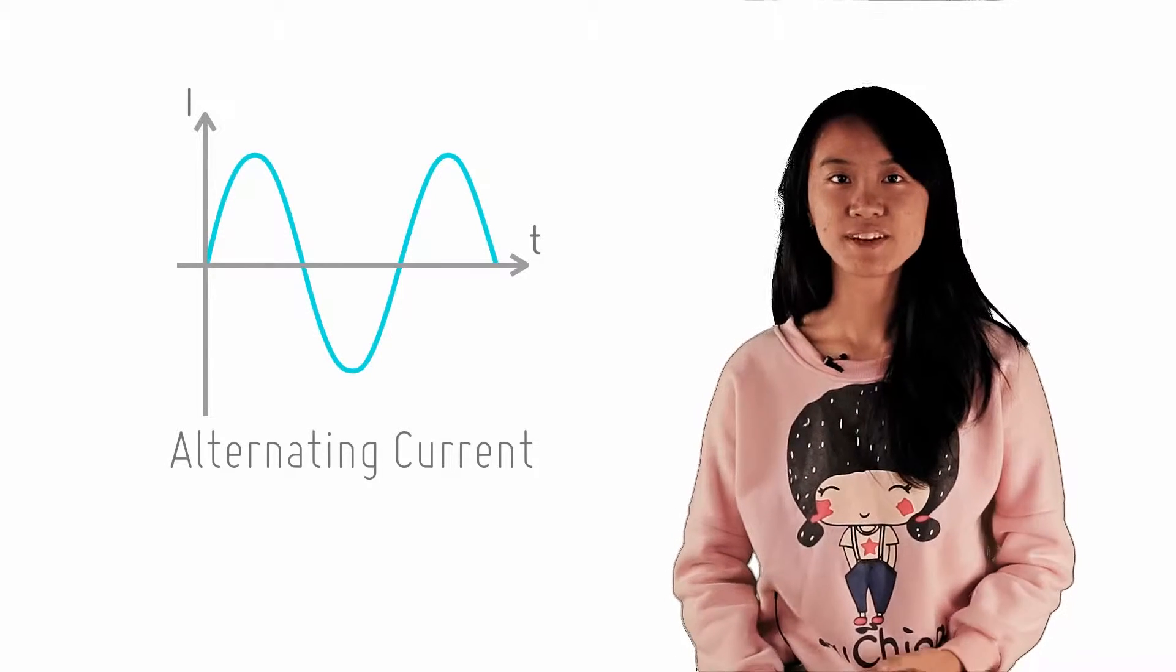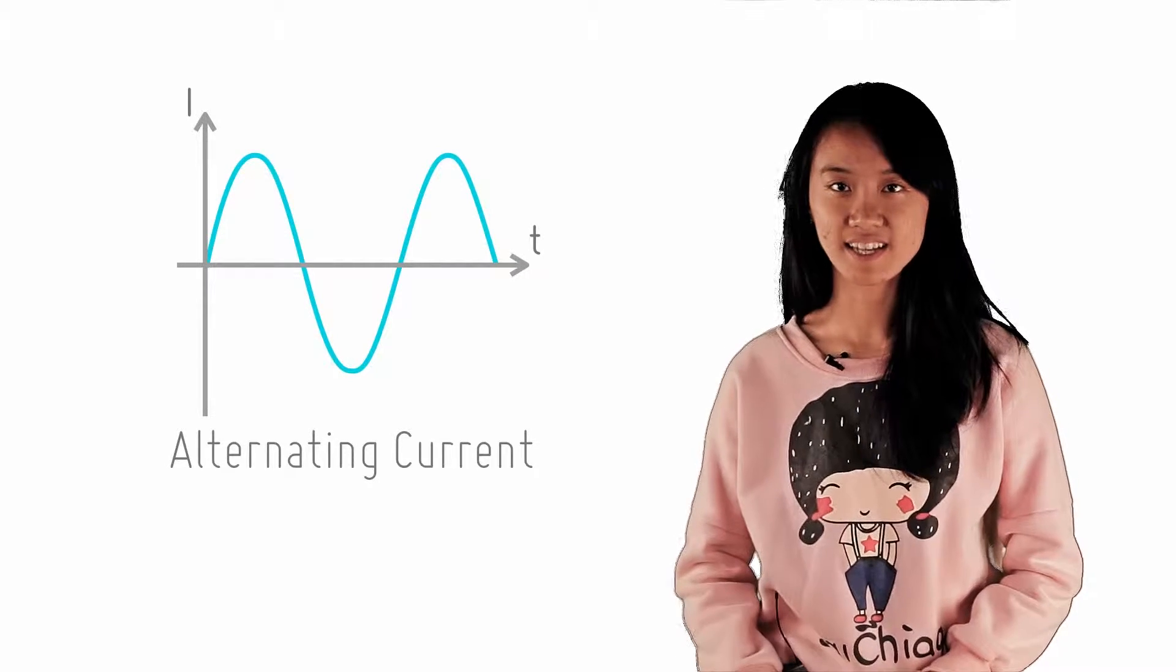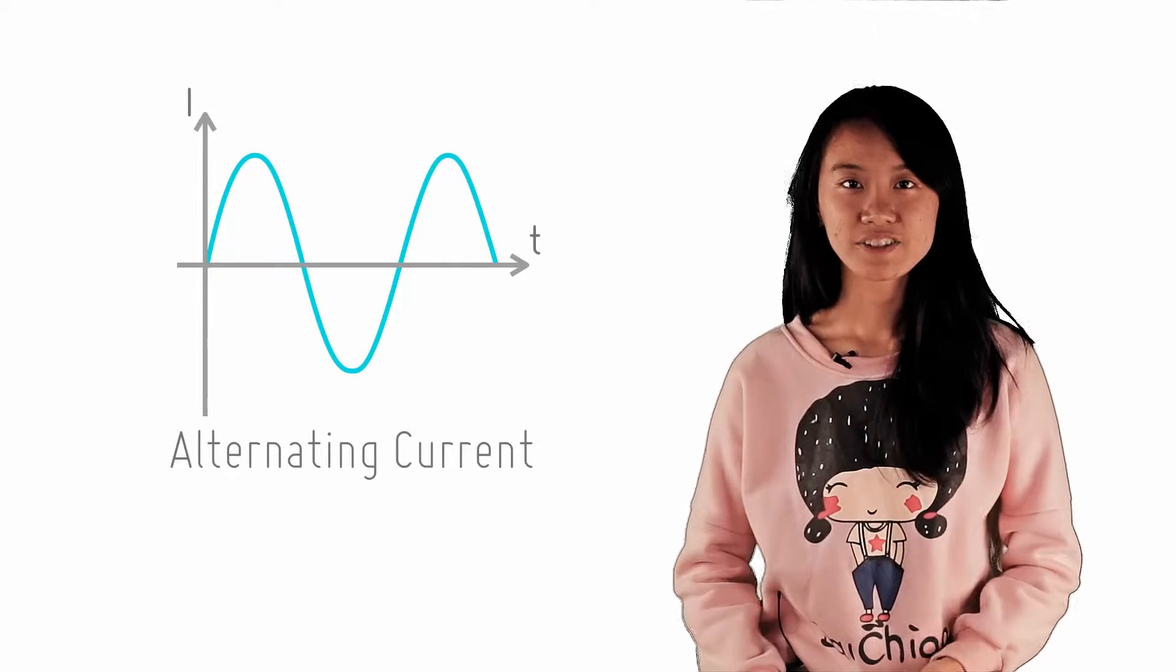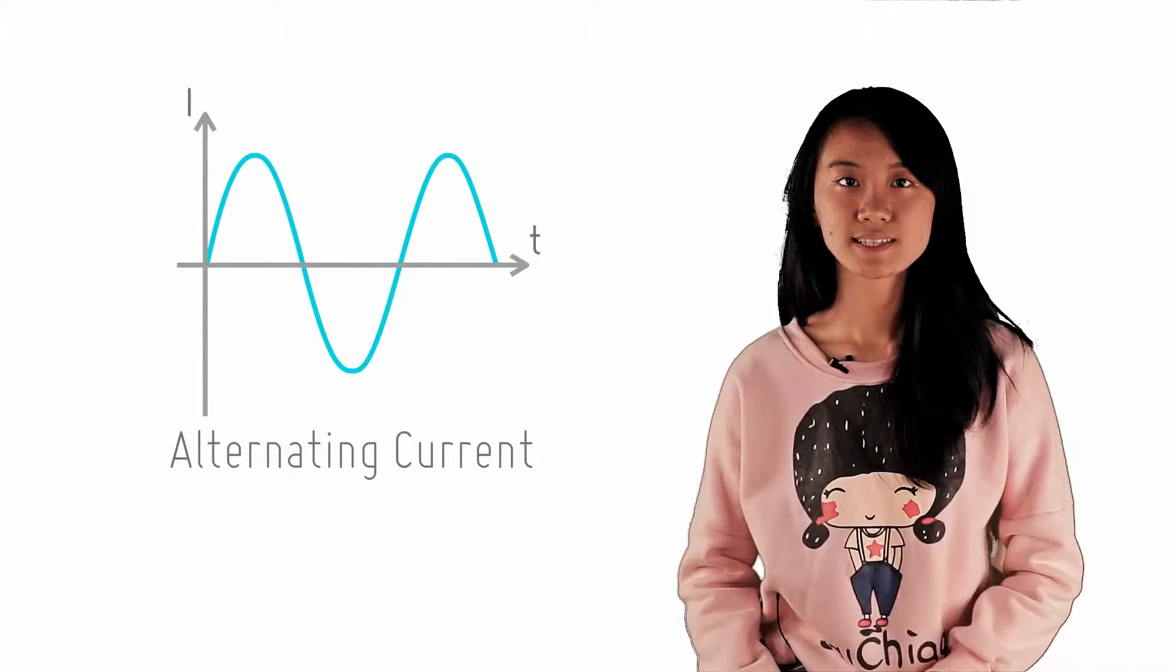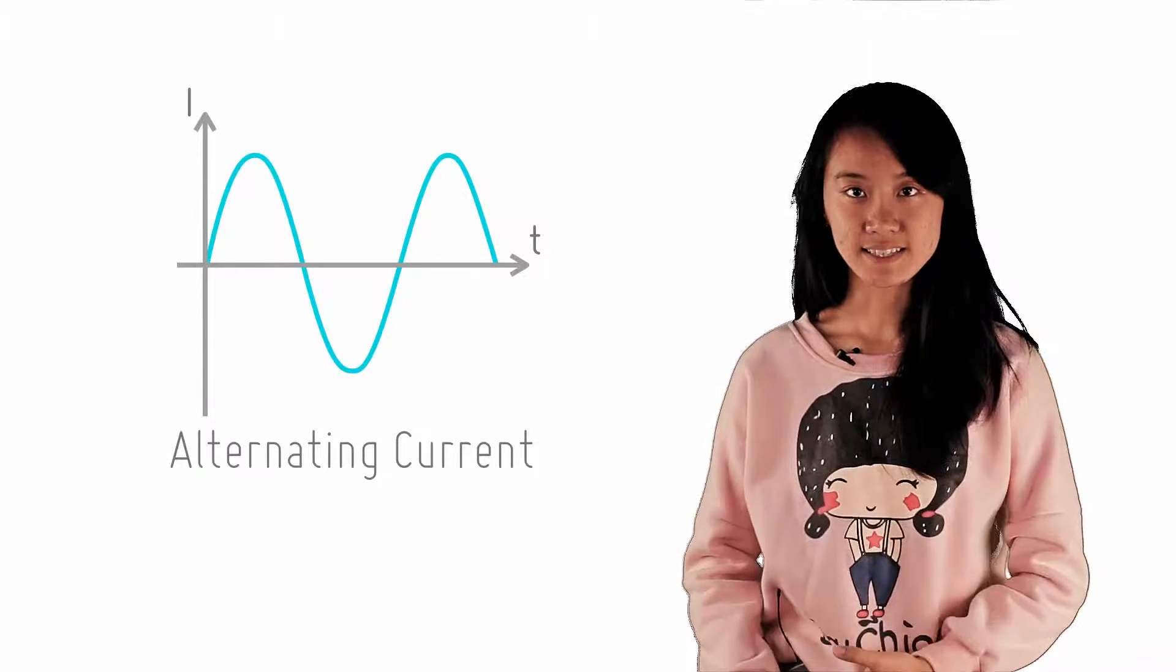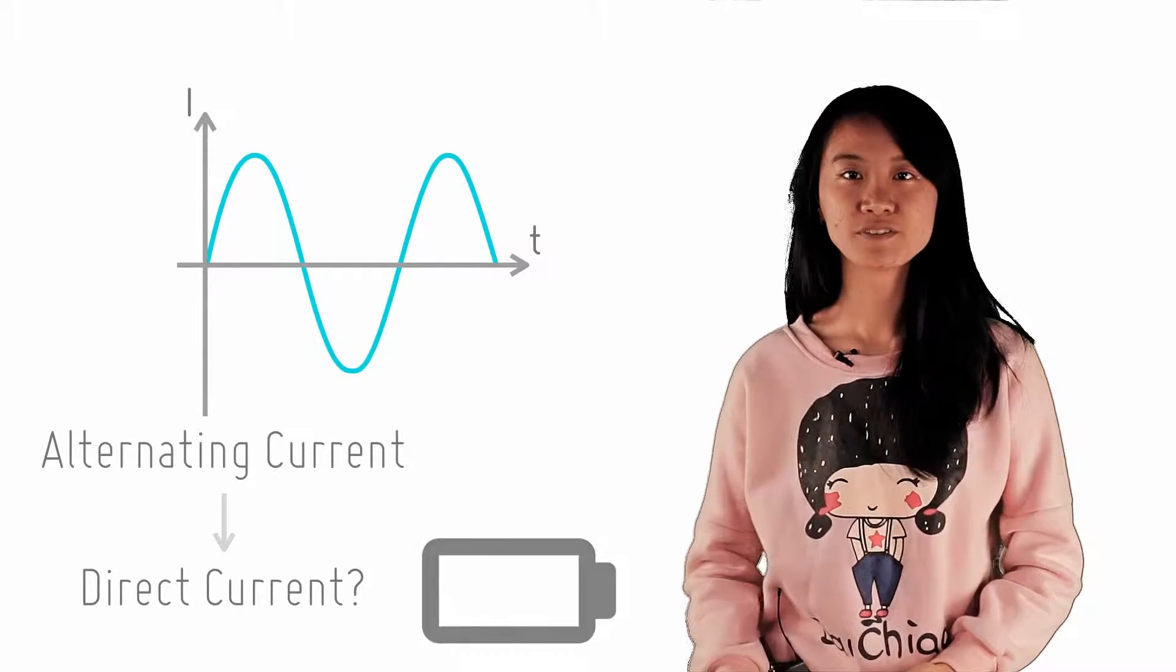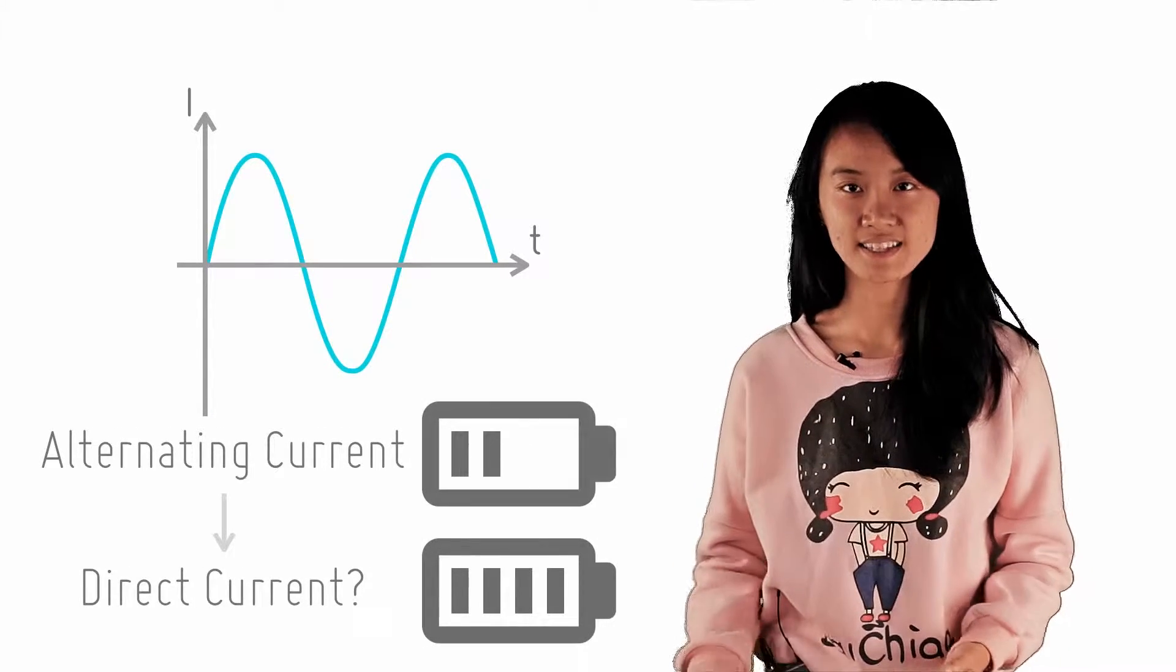In the previous three lessons, we have covered the basic concepts of alternating currents. When using electric power in our daily lives, we need to convert AC to DC, such as when charging the phone battery, so the phone will not alternate between charging and discharging.